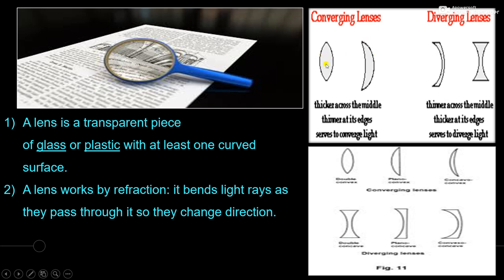The converging lens is thicker across the middle and thinner at the edges, and it serves to converge the light. The diverging lens is thinner across the middle and thicker at its edges, and it serves to diverge or spread the light.